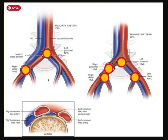May-Thurner physiology refers to the compression point right here. This is where the right common iliac artery compresses the left common iliac vein against the L5-L4 vertebra — it squeezes it like a pancake. Depending upon how your vasculature is set up and if you have other predisposing conditions, there can be extra compressions in this area.